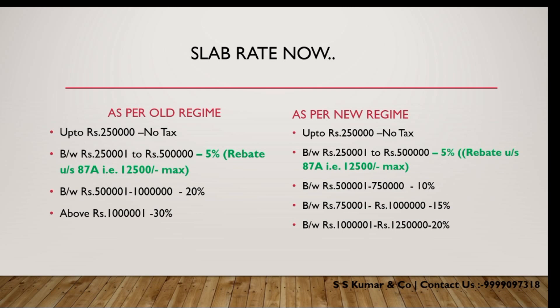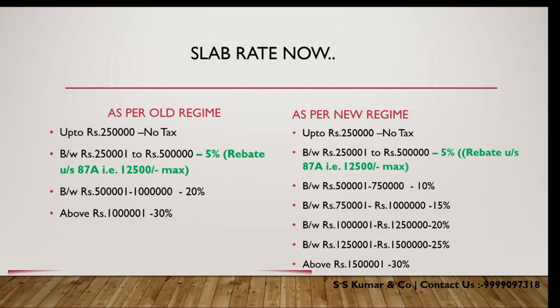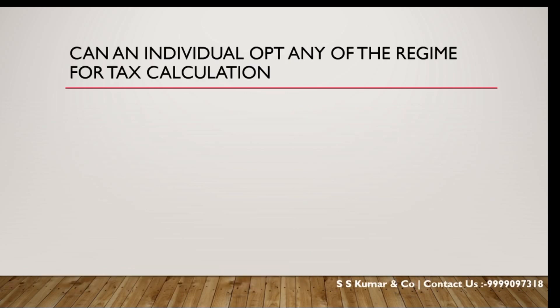For income above 15 lakhs, the tax rate is 30%. Education cess is 4%. If surcharge is applicable, then surcharge will also be added to the total tax. Can an individual opt for either regime for tax calculation? The answer is yes — old regime and new regime are both alternatives to each other.